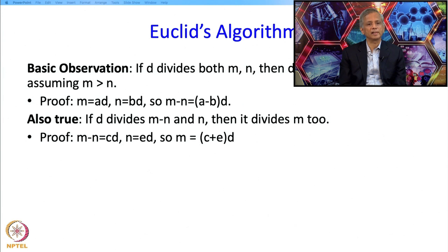So D divides m-n, so m-n must be c times d. Then D divides n, so n must be some e times d and so m which is m-n plus n must be c plus e times d. So we have written m as a multiple of c plus e times d, so D is a factor of m as well.